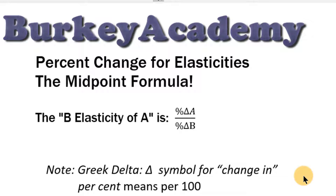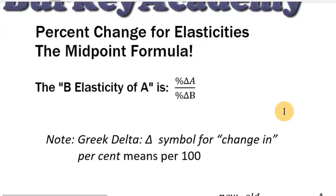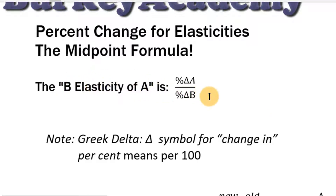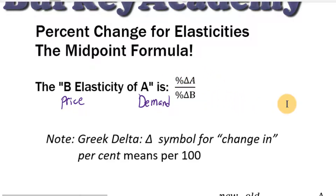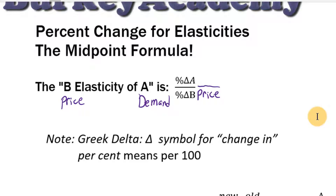Let's talk about how we calculate percentage changes when we're calculating elasticities. We use a special formula called the midpoint formula, and this is a technique used to calculate percentage changes pretty much only when calculating elasticities. Any elasticity — for example, the B elasticity of A, or price elasticity of demand — is always calculated as a percent change divided by a percent change. The Greek letter Delta always means 'change in.' Price elasticity of demand: the first word goes in the denominator, so percent change in price is on the bottom, and percent change in quantity demanded goes on top.